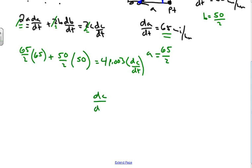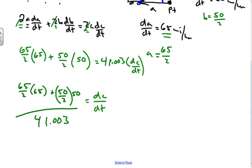So dc/dt is going to equal (65/2 × 65) + (50/2 × 50) all over 41.003. If we put that in our calculators - 65 squared divided by 2 plus 50 squared divided by 2, and divide that all by 41.003 - I got an answer of approximately 82.006, and that would be miles per hour.